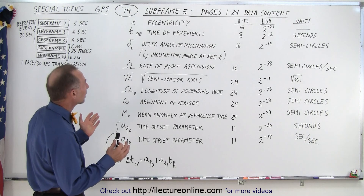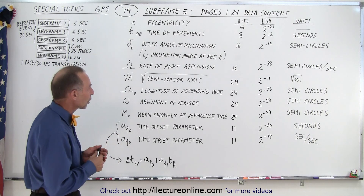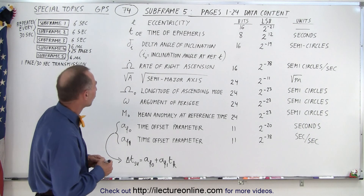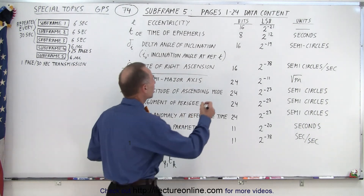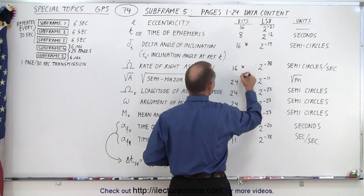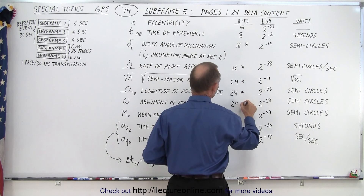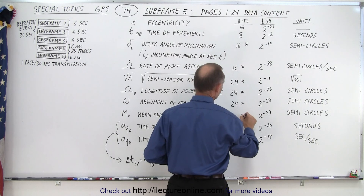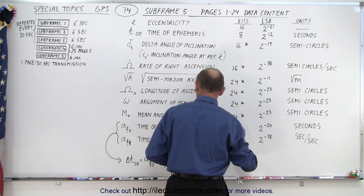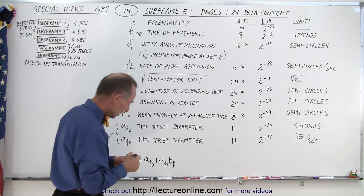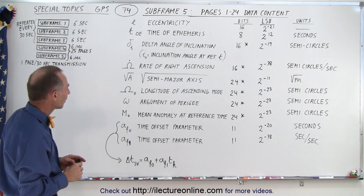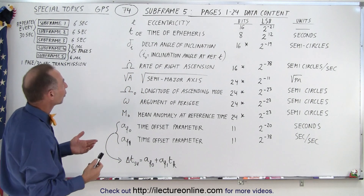Most of this data is in what we call two's complement format. Let me indicate which ones they are — this one, this one, this one, this one, this one, this one, and this one. I'm not sure about these, but I know those for sure are in two's complement format.